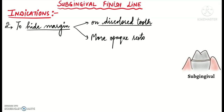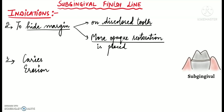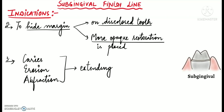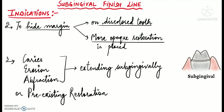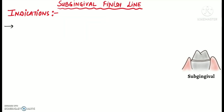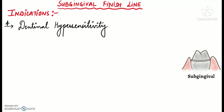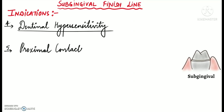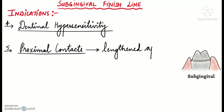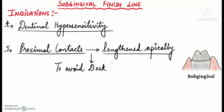Sub-gingival finish lines are also indicated when there is presence of caries, erosion or abfraction extending sub-gingivally, or if there is a pre-existing or old restoration that extends sub-gingivally. Sub-gingival finish line is also indicated in the presence of dentinal hypersensitivity, and may also be indicated when restoring teeth that have proximal contacts needing to be lengthened apically in order to avoid dark triangles.